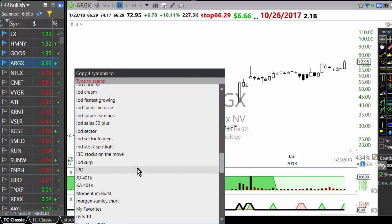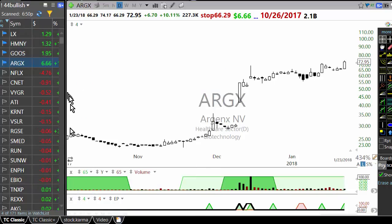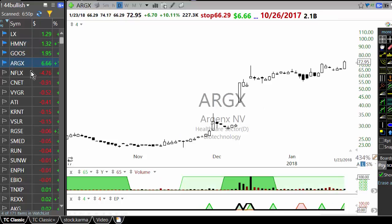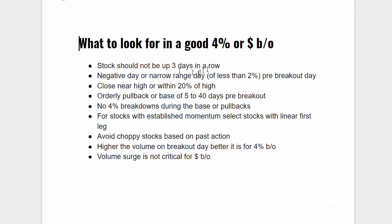GOOS is a very nice setup, and this is another setup — so you have four setups to work with. I will copy these to momentum burst. If you do this regularly, you should be able to find some of these setups during the day itself. To repeat: stock should not be up three days in a row, because if it is, the move has already started, so you are buying late — a low probability setup. Negative day or narrow range day pre-breakout — you want something that has not started the move — close near high or within 20% of high.